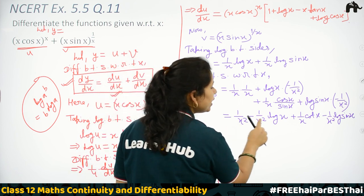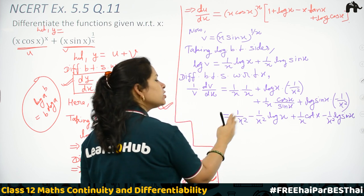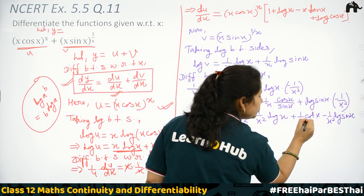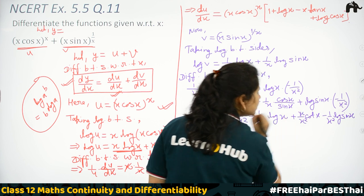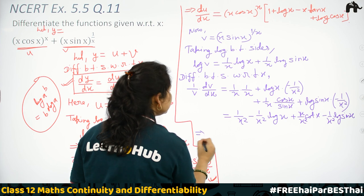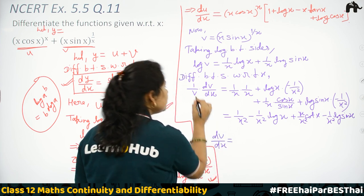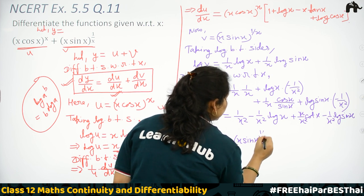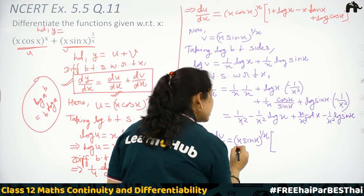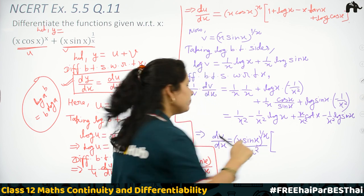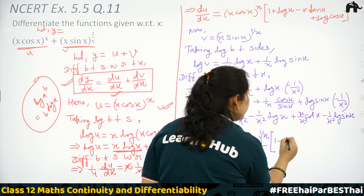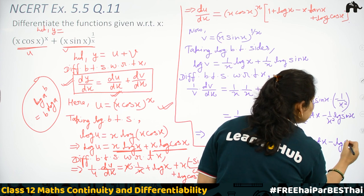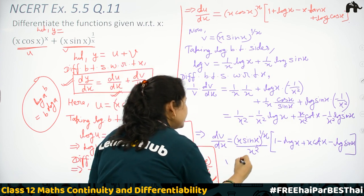So dv/dx = v · (1/x²) · [1 − log x + x·cot x − log(sin x)]. Substituting v = (x·sin x)^(1/x), we get: dv/dx = (x·sin x)^(1/x) · (1/x²) · [1 − log x + x·cot x − log(sin x)]. Now we have both du/dx and dv/dx calculated.